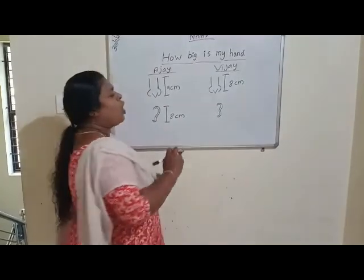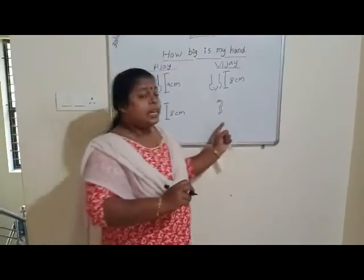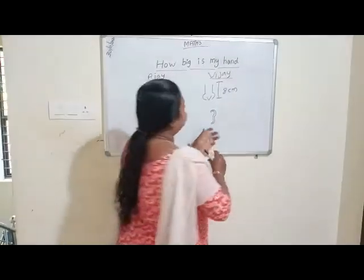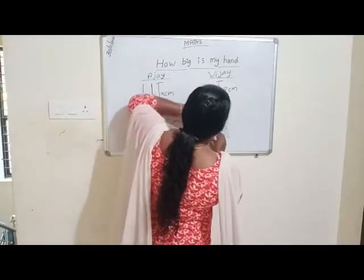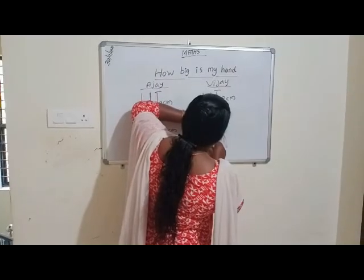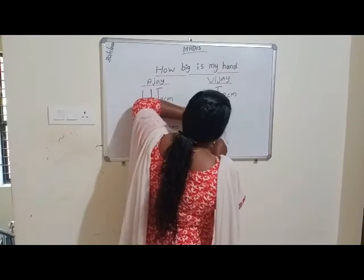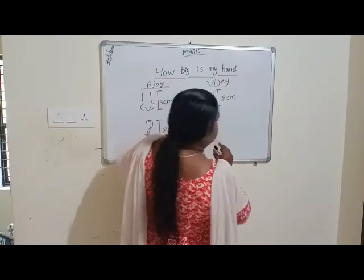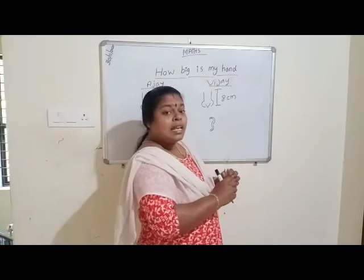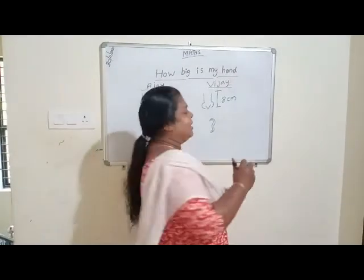So how many cm is Vijay's ear? Vijay's ear is 6 cm.